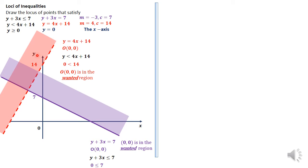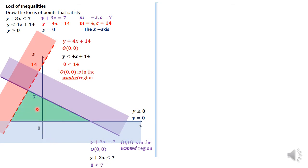For the last inequality, y is greater than or equal to zero — that's just the x-axis. This means we want values of y that are bigger than or equal to zero, so we shade away the region below the x-axis. This gives us an enclosed region, and that enclosed region is our wanted region — the locus of points satisfying all three inequalities. That's our answer for the first question.